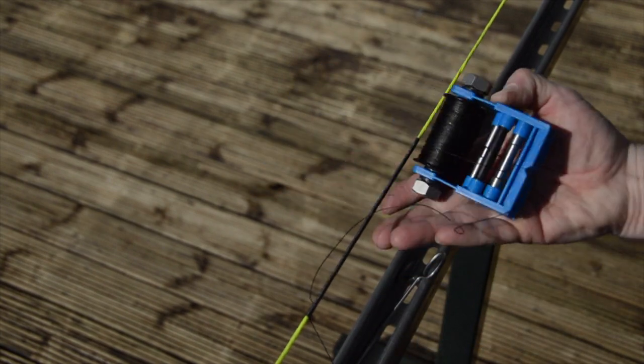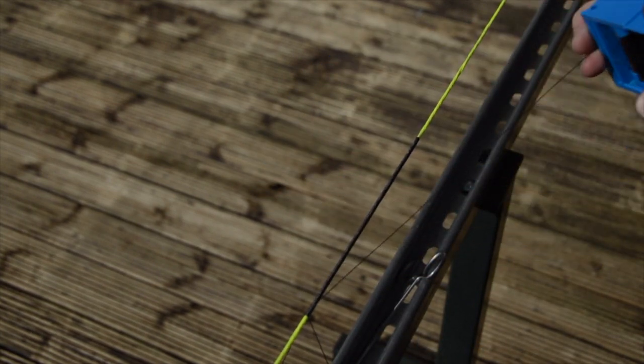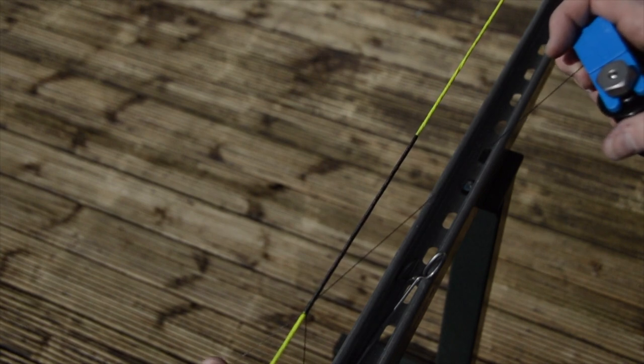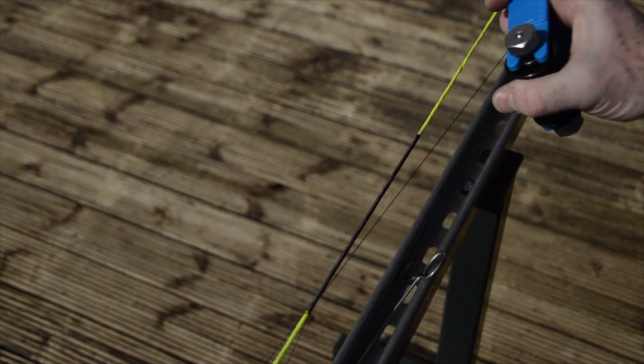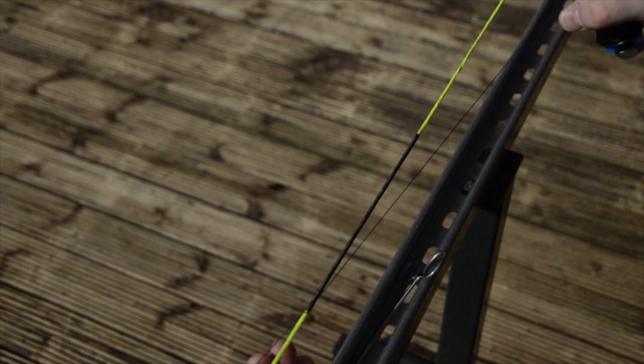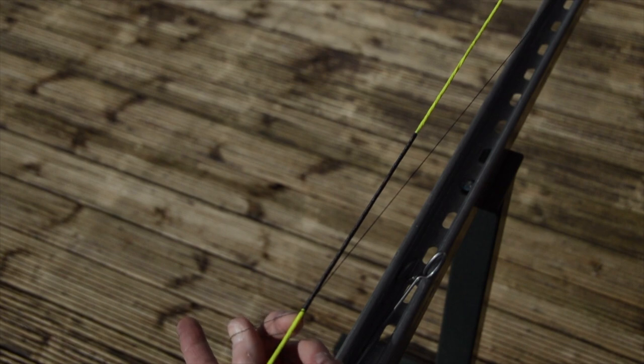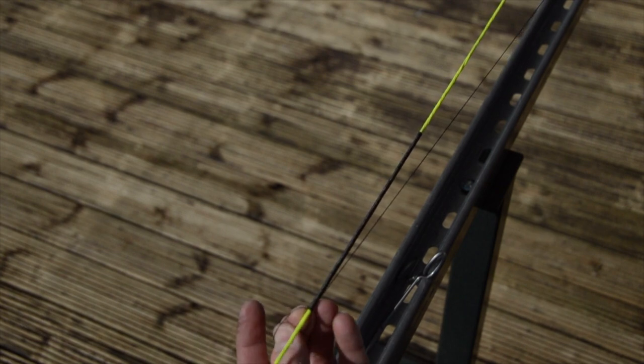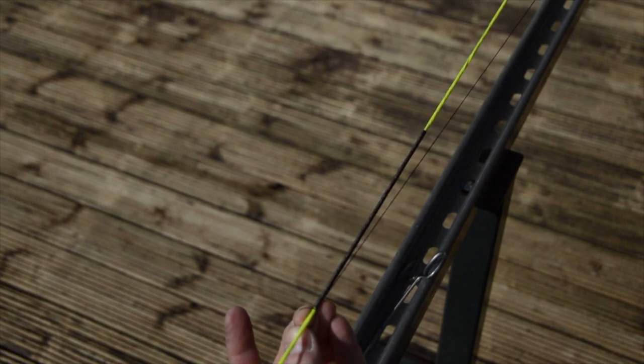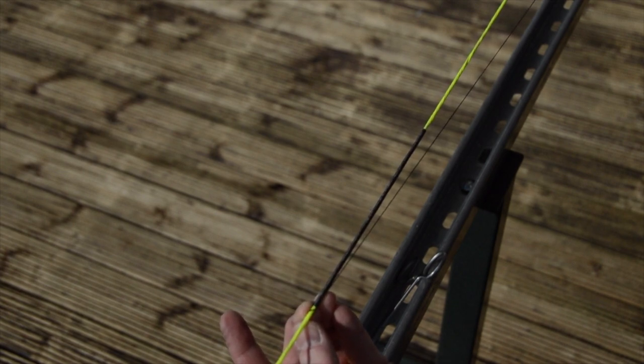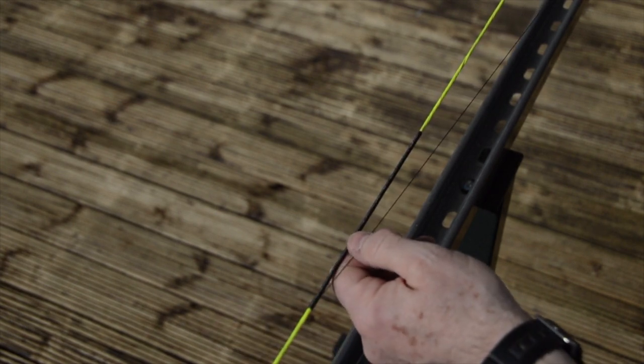Now I can use the serving tool to help me pull this through. I've got this long loop here that I need to get rid of, so I'm going to pull gently but firmly on the serving tool, making sure I don't let the serving material bunch up, and keep pulling until it pulls it tight.